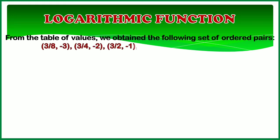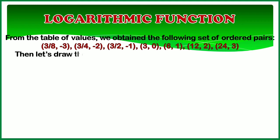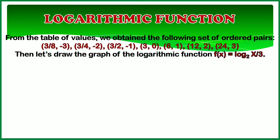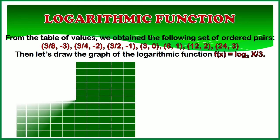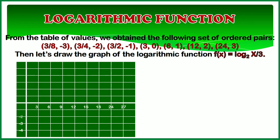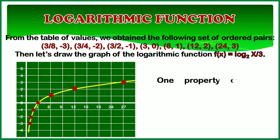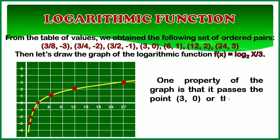From the table of values, we obtained the following set of ordered pairs. Then let's draw the graph of the logarithmic function f(x) equals the logarithm of x over 3 to the base 2. One property of the graph is that it passes the point (3, 0), or the graph has its x-intercept x equals 3.